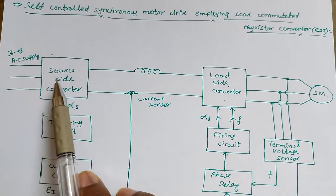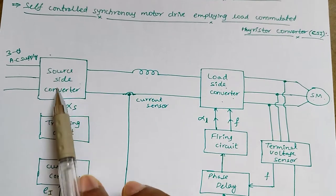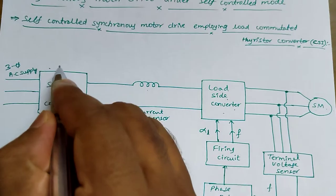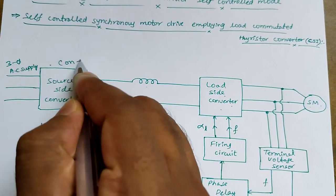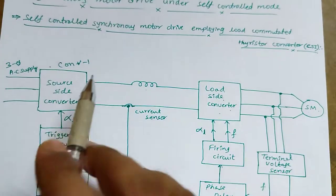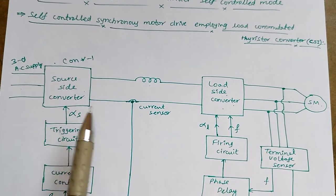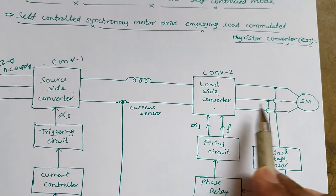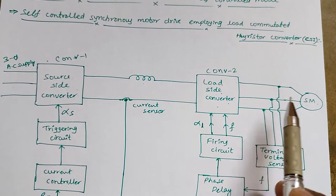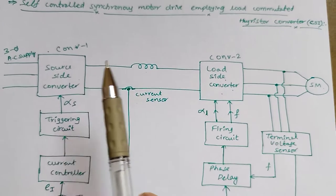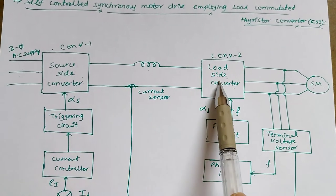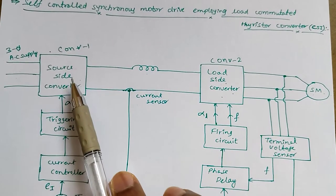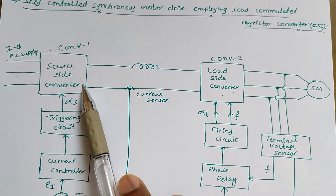A three-phase AC supply is connected to the rectifier, called the source side converter (Converter 1), because it is connected on the source side. Converter 2 is connected on the motor side or load side, so it is called the load side converter. Between the source side converter and load side converter, a DC link inductor is connected to remove the ripples in the output current of the source side converter.